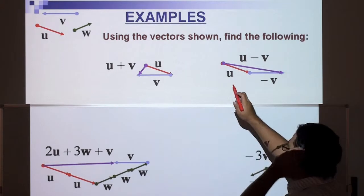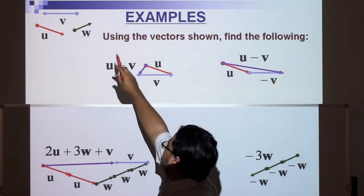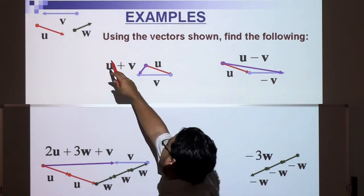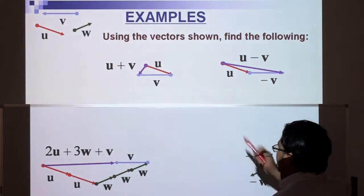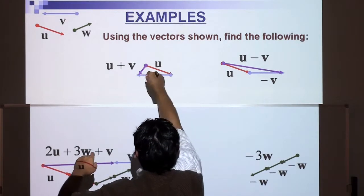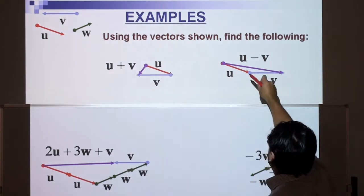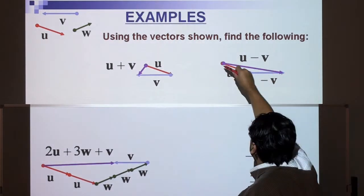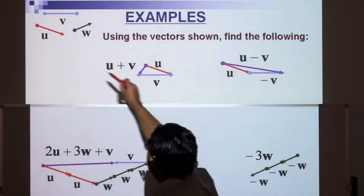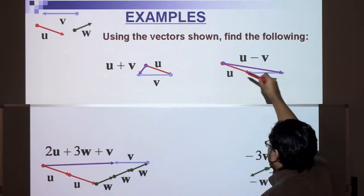Let's move on. So here we have some examples using the vectors shown. Find the following. We have u, the red vector, v, purple or blue, and w, the green one. Here, u plus v: you take u there, then you add v going that way, and then you get this resultant vector. The next one, u take away v: so we have u and then for v, see the negative sign, so we've changed directions. Instead of v pointing that way, we have v pointing this way, and that purple vector right there is the resultant vector.